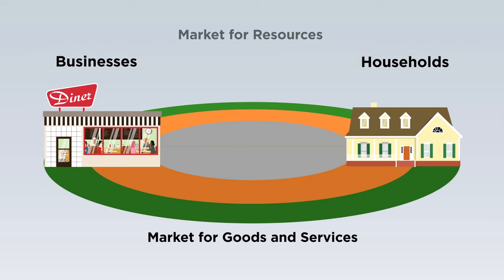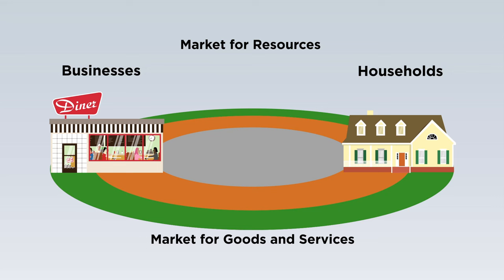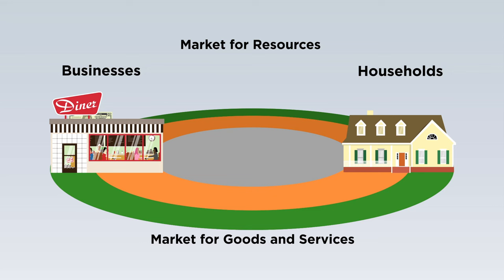Let's step back and notice a few things about the circular flow model. First, it shows how businesses and households interact in the two markets. Notice that households and businesses are both buyers and sellers. Households are sellers in the market for resources — they sell land, labor, capital, and entrepreneurial ability in exchange for money, which is called income. Households are buyers in the market for goods and services, exchanging income for goods and services. Businesses are sellers in the market for goods and services, selling in exchange for money called revenue. Businesses are buyers in the market for resources, using revenue to buy land, labor, capital, and entrepreneurial ability — the money spent here is called the cost of production.